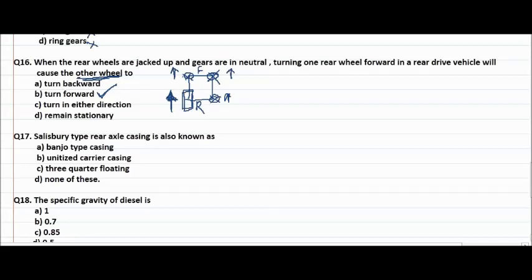Next question is Salisbury type rear axle casing is also known as - so none of this is not the answer, banjo type casing not the answer, three quarter floating no. Unitized carrier casing and Salisbury type rear axle casing are both same. Remember this.